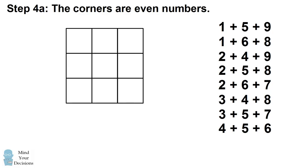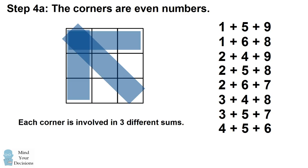Continuing the reasoning, we can find the corners have to be even numbers. A corner would be involved in one of the row sums, one of the column sums, and also one of the diagonal sums. So each corner is involved in exactly 3 of the sums, and this corresponds to the numbers 2, 4, 6, and 8.